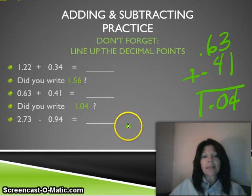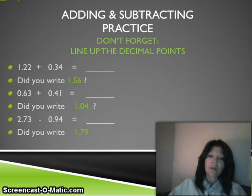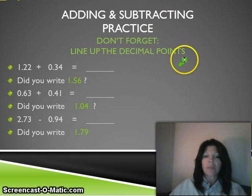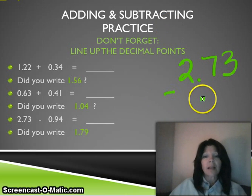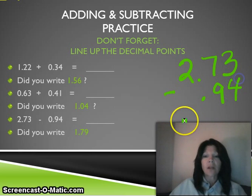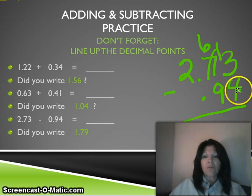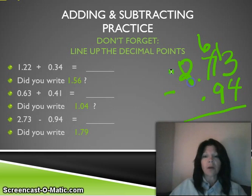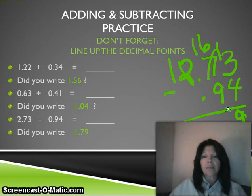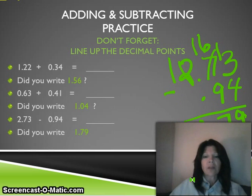Your next problem: two and seventy-three hundredths minus ninety-four hundredths. Write that in your journal, and when you're ready, continue the video. Did you get one and seventy-nine hundredths? First, write two and seventy-three hundredths, line up your decimal points, then minus ninety-four hundredths. We borrow because four can't subtract from three — the seven becomes six, the three becomes thirteen. Thirteen minus four is nine. You can't subtract nine from six, so borrow again — the two becomes one, the six becomes sixteen. Sixteen minus nine is seven. Bring the decimal point down, one minus nothing is one — you get one and seventy-nine hundredths.